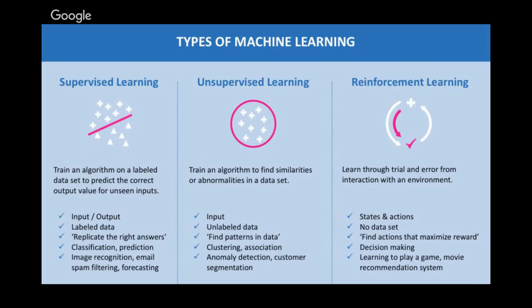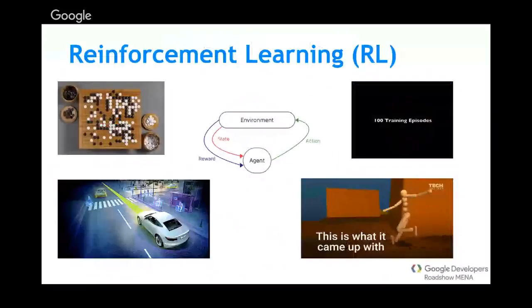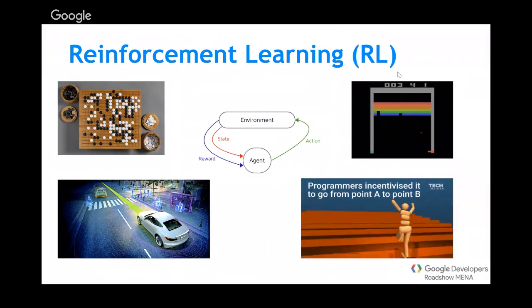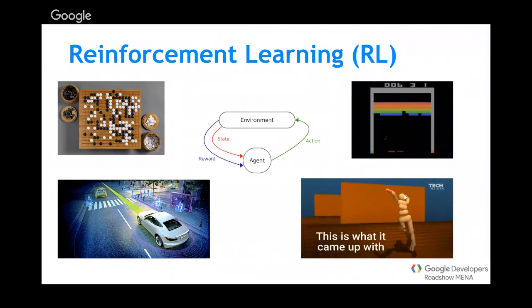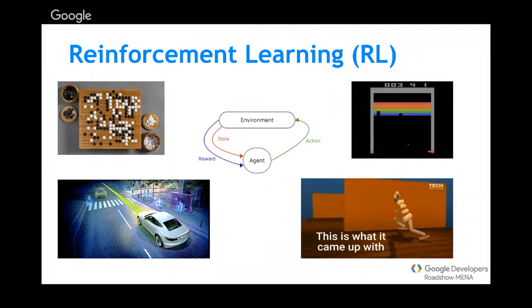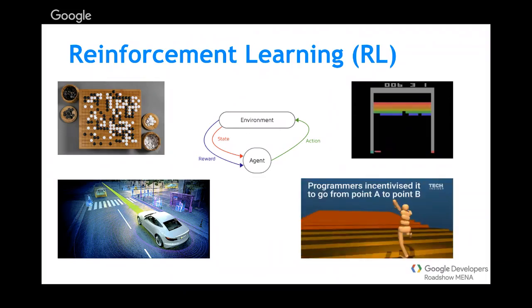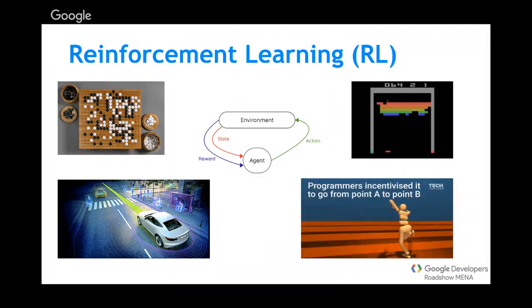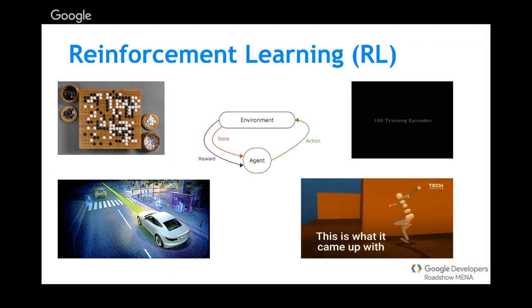The third type is reinforcement learning, where the agent or algorithm learns from iterations. Instead of giving it data, we put it into an environment, and from its interaction with the environment it learns how to act. We can see this for example with the agent from DeepMind, and reinforcement learning is visible in Atari games. In reinforcement learning, the agent always tries to interact with the environment to get the best score.